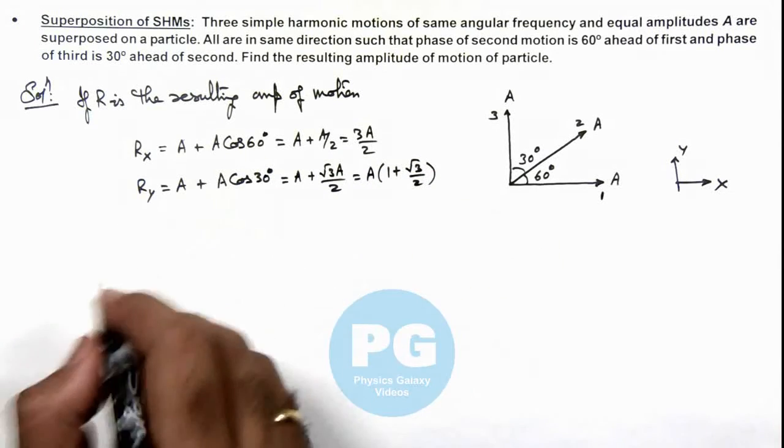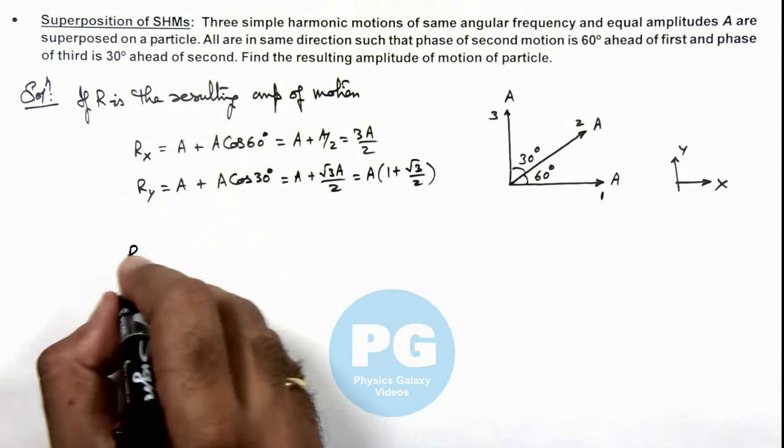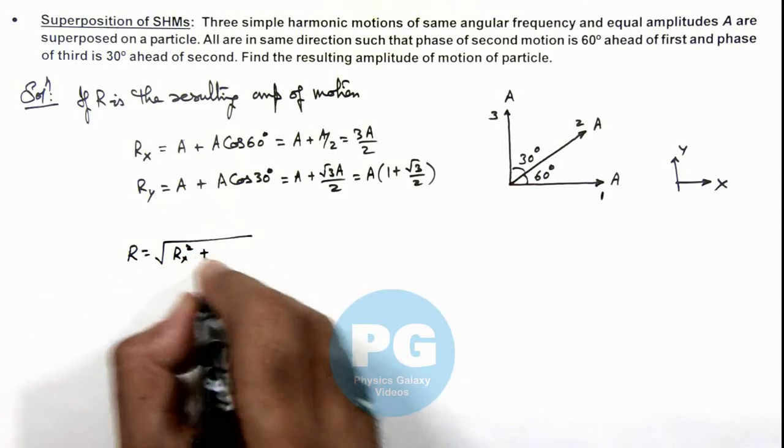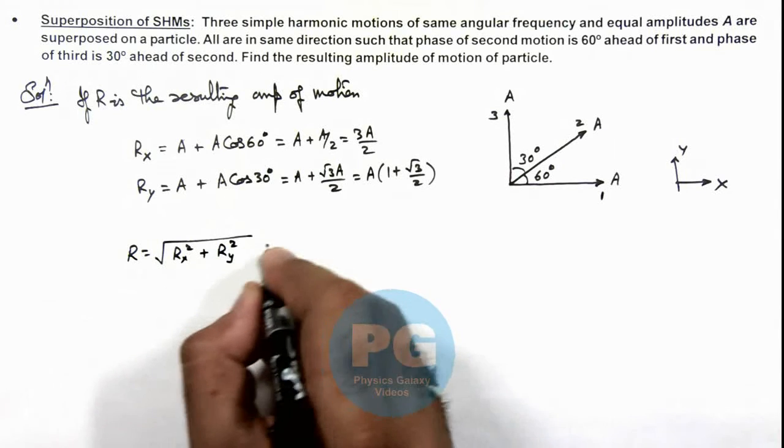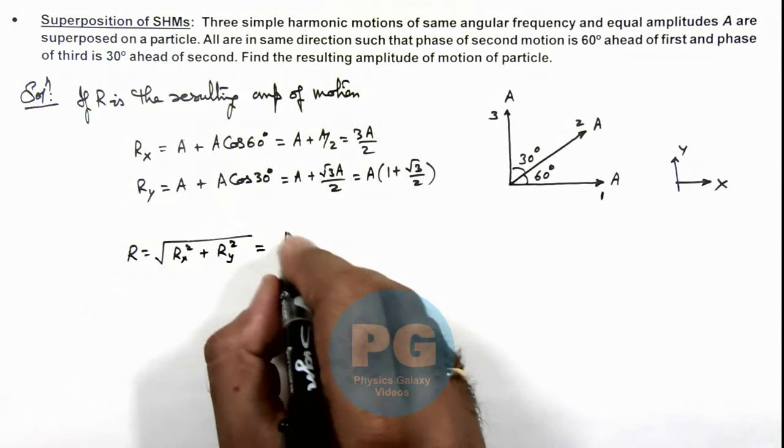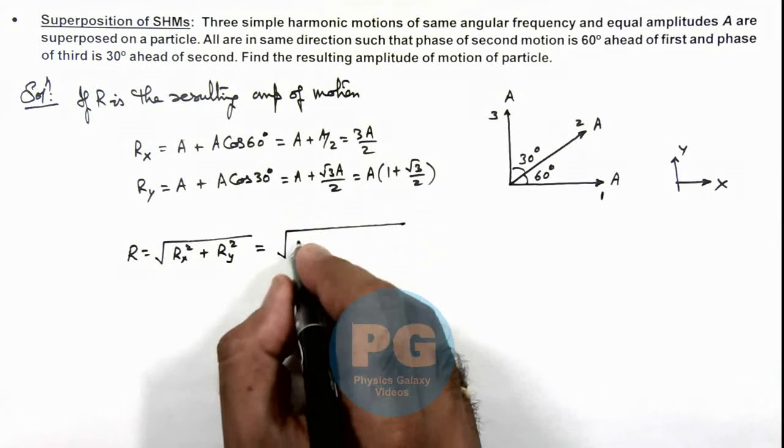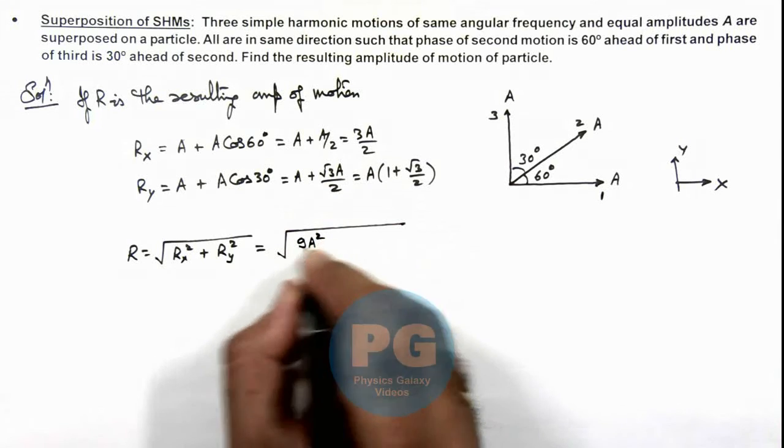Now in this situation we can calculate the value of R as root of Rx square plus Ry square, which is equal to root of this square plus this square.